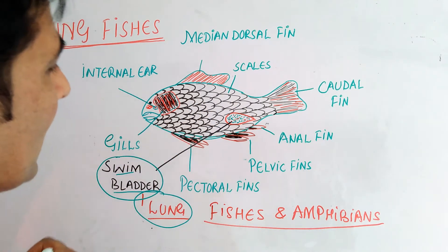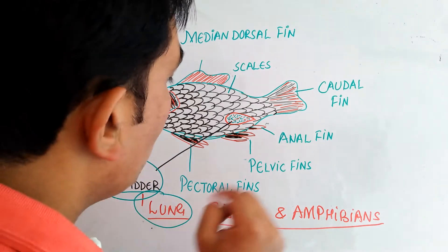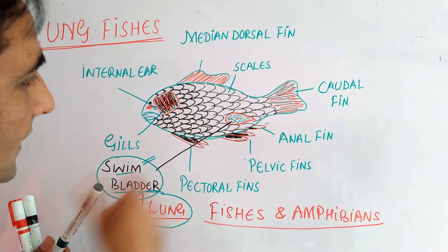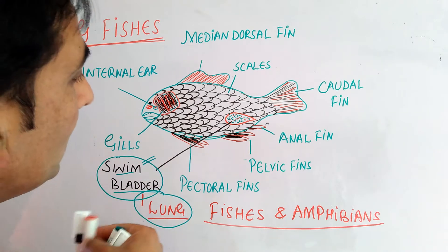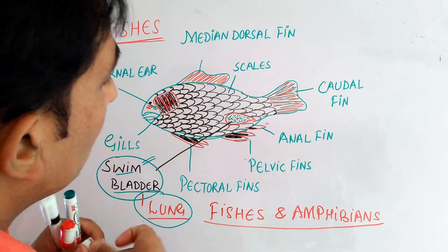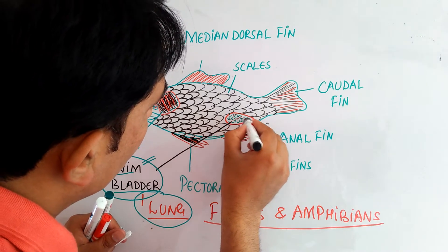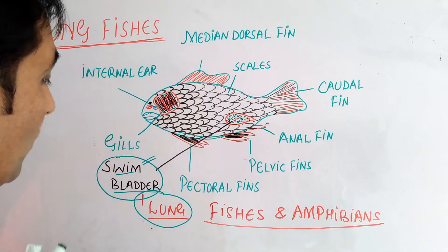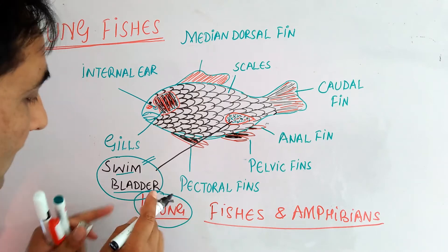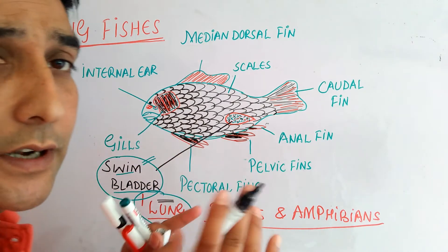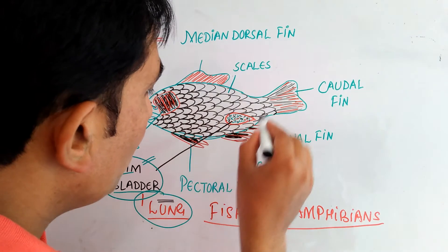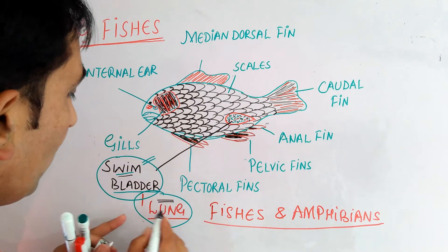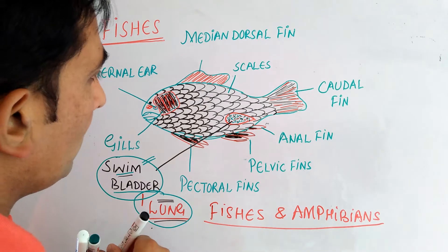But where lies the difference? In bony fishes there is a structure called the swim bladder. This swim bladder, which is present in the bony fishes, has been modified into lungs in the case of lungfishes. This is the first difference. The swim bladder in lungfishes has been modified into a lung — it is the unique feature of these fishes.